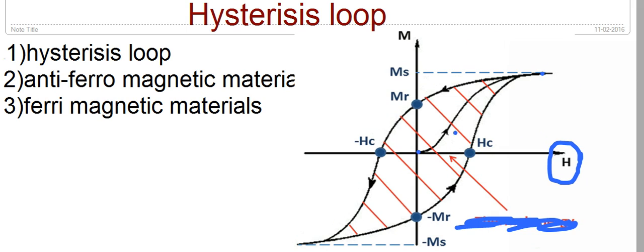In order to decrease the magnetization, we apply the magnetic field in the opposite direction. That reverse field is called the coercive magnetic field. The magnetization in the opposite direction when the field is applied in the reverse direction gives us the hysteresis loop, which defines the behavior of the ferromagnetic material when it is placed in an external magnetic field.